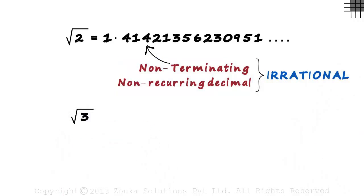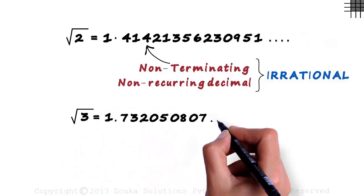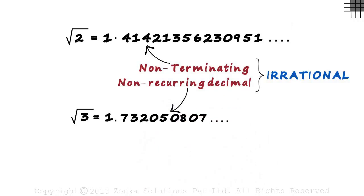Consider square root of 3 for instance. You will get its value as 1.732050 and so on. Even this decimal is non-terminating and non-recurring. So, root 3 is also an irrational number.